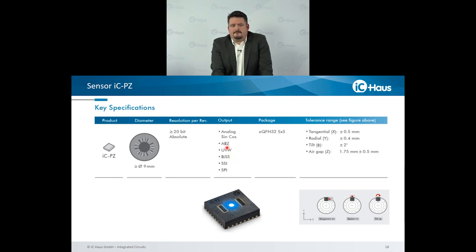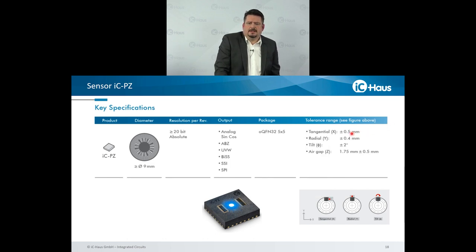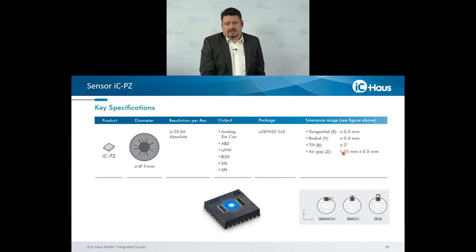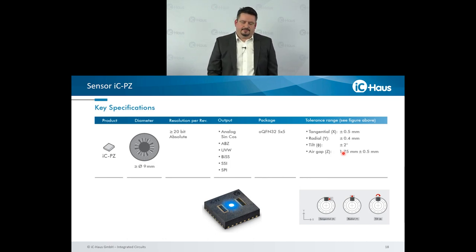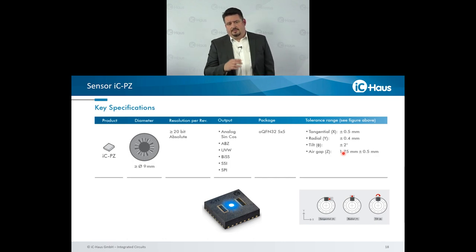So you can make different combinations of the output just by software and programming. The package is the OKFN 32 5x5. As you can see, the tolerances are — for a high-resolution system like the ICP-Z — very high. It's 0.5 in tangential, radial 0.4. The air gap is 1.75, plus or minus 0.5 millimeter. Generally, all our optical reflective encoder ICs are qualified and work between minus 40 to 105 degrees. The ICP-Z is extended to 125 degrees maximum.